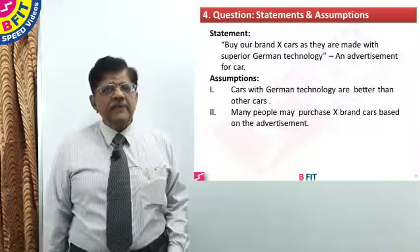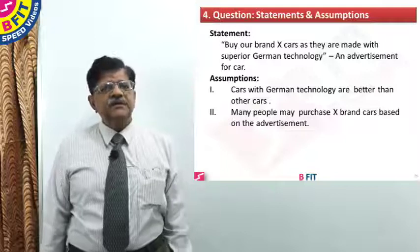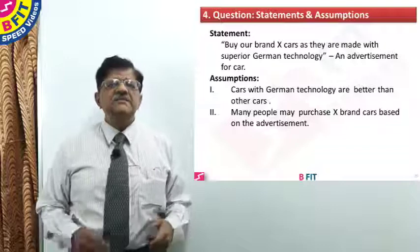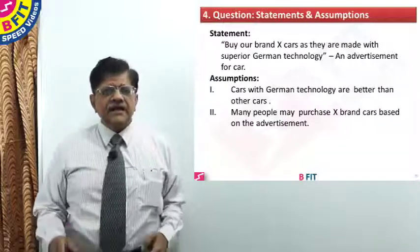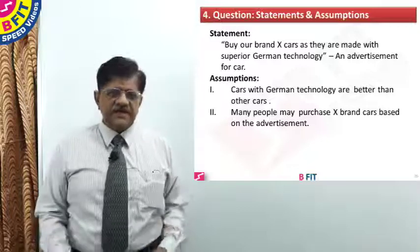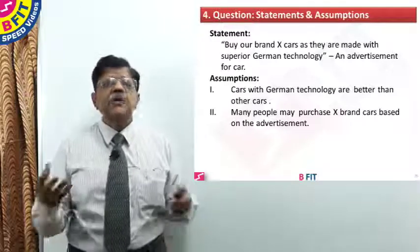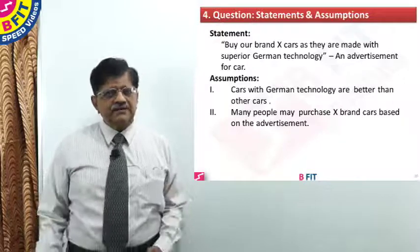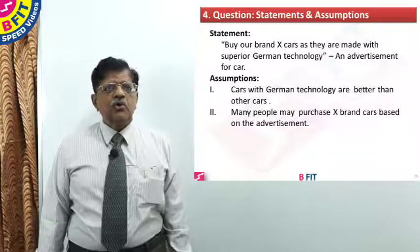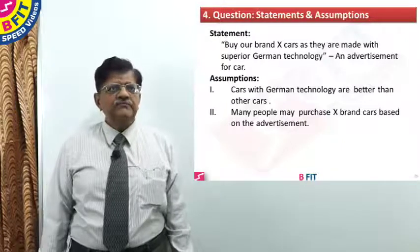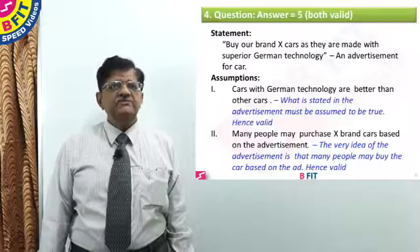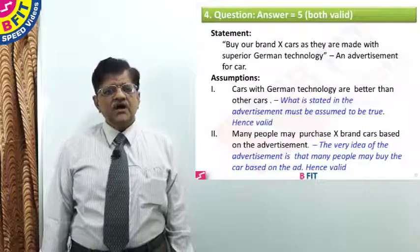For assumption two: many people may purchase X brand cars based on the advertisement. As stated earlier, when any advertisement is released or any scheme is introduced, the underlying assumption is that many people will go for it and make use of the facility — that is why it is first introduced and implemented. Therefore assumption two is also valid. Both assumptions are valid, so the answer is five.